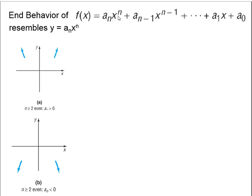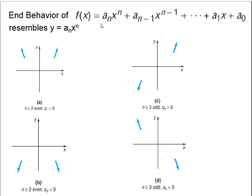If the degree is odd, the graph goes in different directions at each end. With a positive leading coefficient, the graph increases at the right end; with a negative leading coefficient, it decreases at the right end. This is our first tool of analysis: based on the degree and leading coefficient, we know what the graph looks like at the ends.